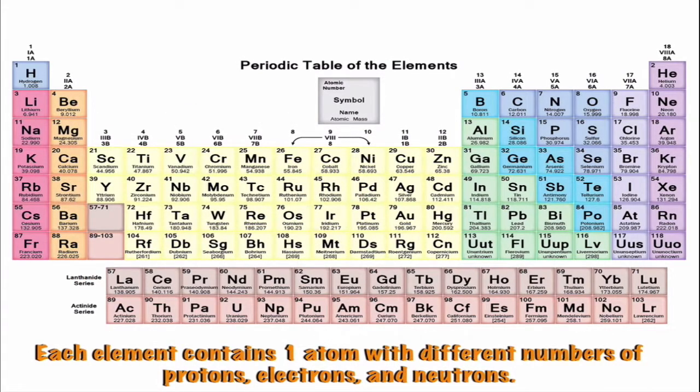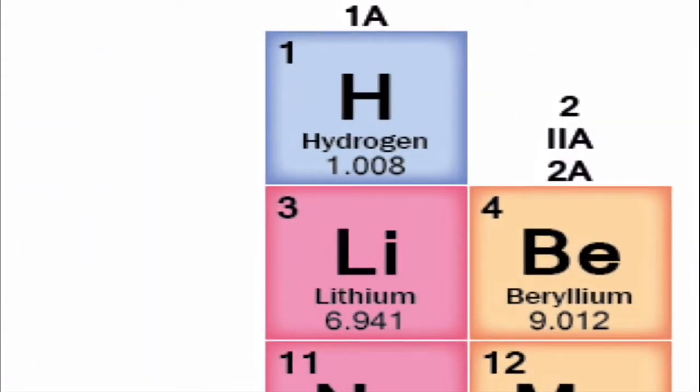On the periodic table of elements, each element contains one atom with different numbers of protons, electrons, and neutrons. Here's the element hydrogen. Hydrogen has an atomic number of one, which means its nucleus has one proton.